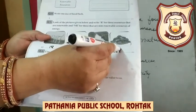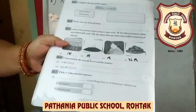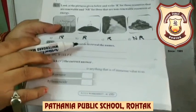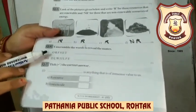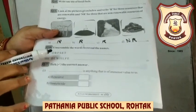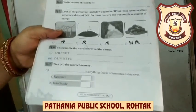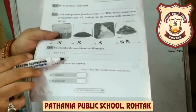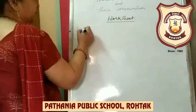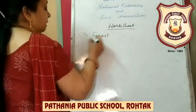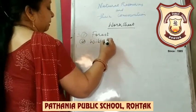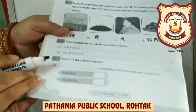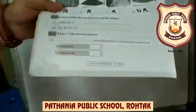Question number six: Unscramble the words to reveal the names. First word: A-E-O-R-F-S-E-T — that is 'forest.' Second word: D-L-W-I-I-L-F-E — that is 'wildlife.' So the first answer is forest and the second is wildlife.